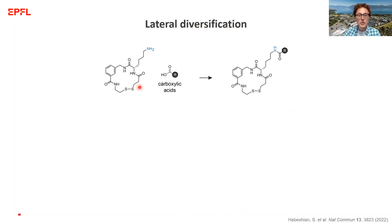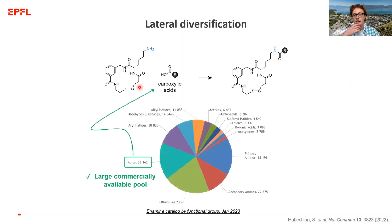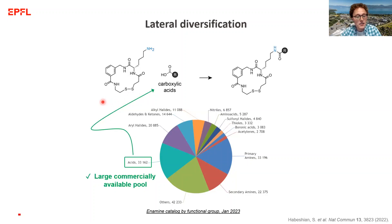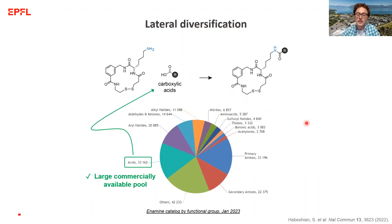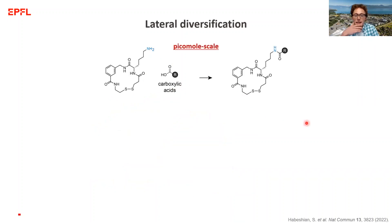There are some key differences: we're using carboxylic acids and not Fmoc amino acids. Of course, there are a pretty good number of Fmoc amino acids commercially available, but carboxylic acids are one of the largest, if not the largest, commercially available pool of drug-like building blocks. By having our synthetic workflow include this functional group, we can nicely increase the chemical diversity of our final products.